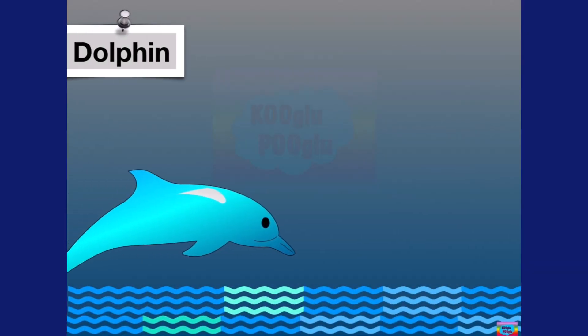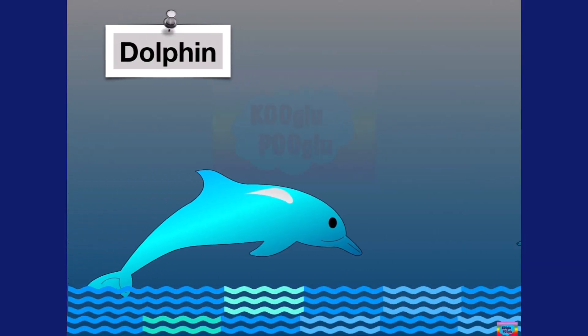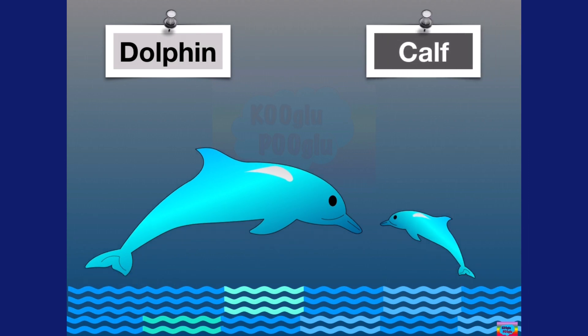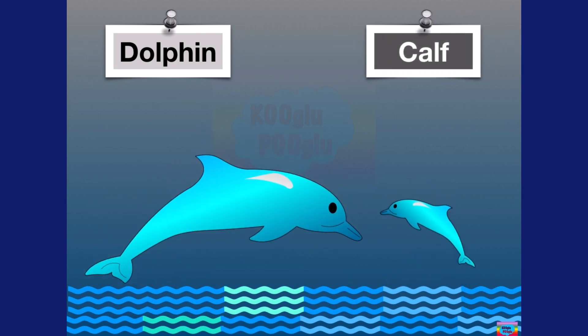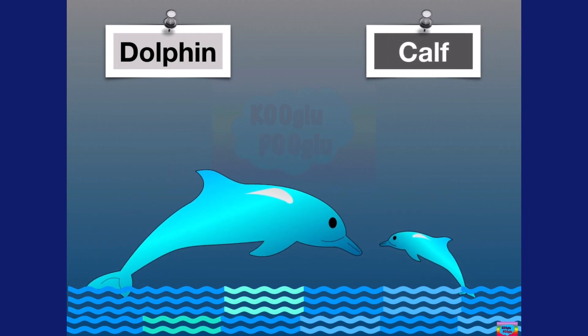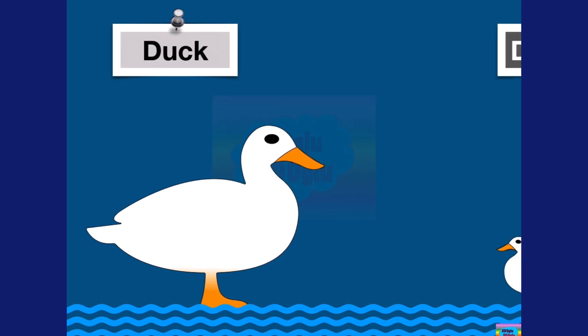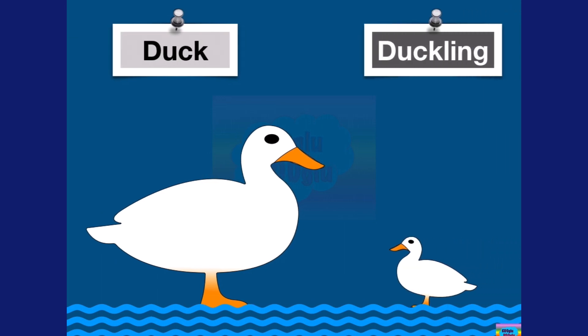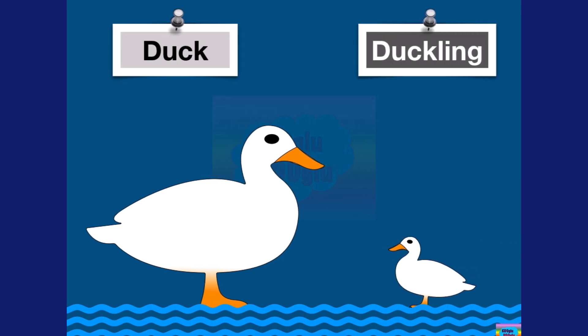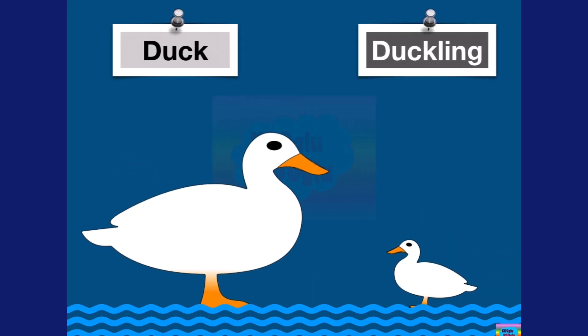Here we got a dolphin. The baby dolphin is called a calf. Next we have a duck, and a baby duck is called a duckling.